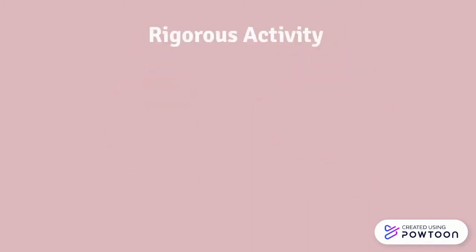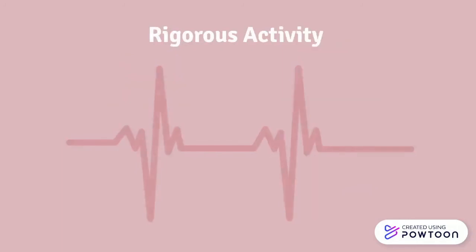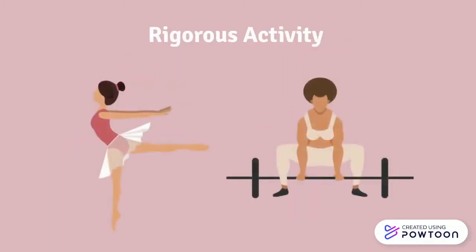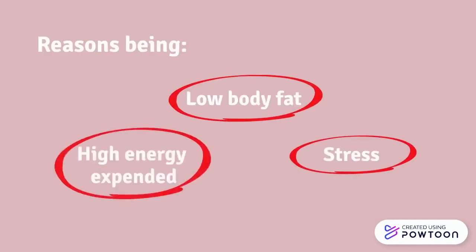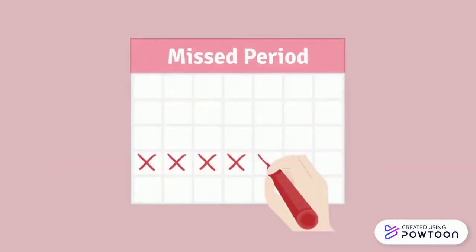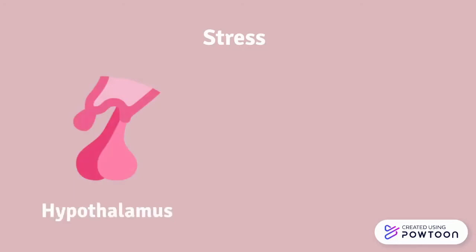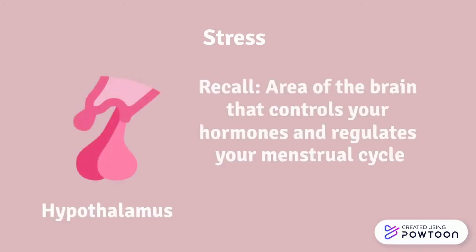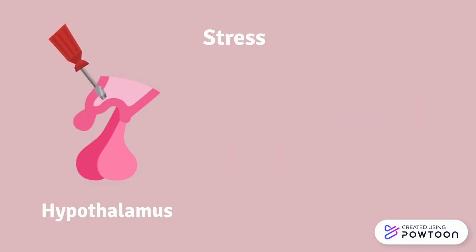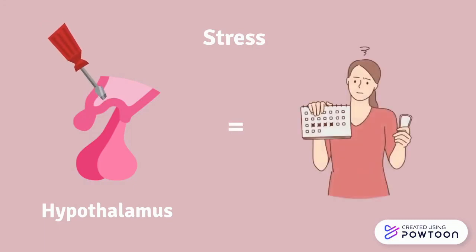Women who participate in activities that require rigorous training, such as ballet or weightlifting, may find that their menstrual cycles are interrupted. This can be because of their low body fat, stress, and high energy expenditure, all of which can contribute to amenorrhea. Stress can also temporarily alter the functioning of your hypothalamus — the area of the brain that controls hormones and regulates your menstrual cycle — so altering such an important gland can contribute to getting amenorrhea.